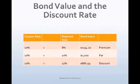Bond value and interest rate relationship: If the current interest rate of similar risk bonds is lower than the coupon rate, the bond will sell above par value — at a premium — because it offers a higher rate of return than similar risk bonds today. If the current interest rate equals the coupon rate, the bond sells at par value. If the current interest rate is greater than the coupon rate, the bond sells below par value — at a discount — because it offers a lower rate of return than similar risk bonds today.